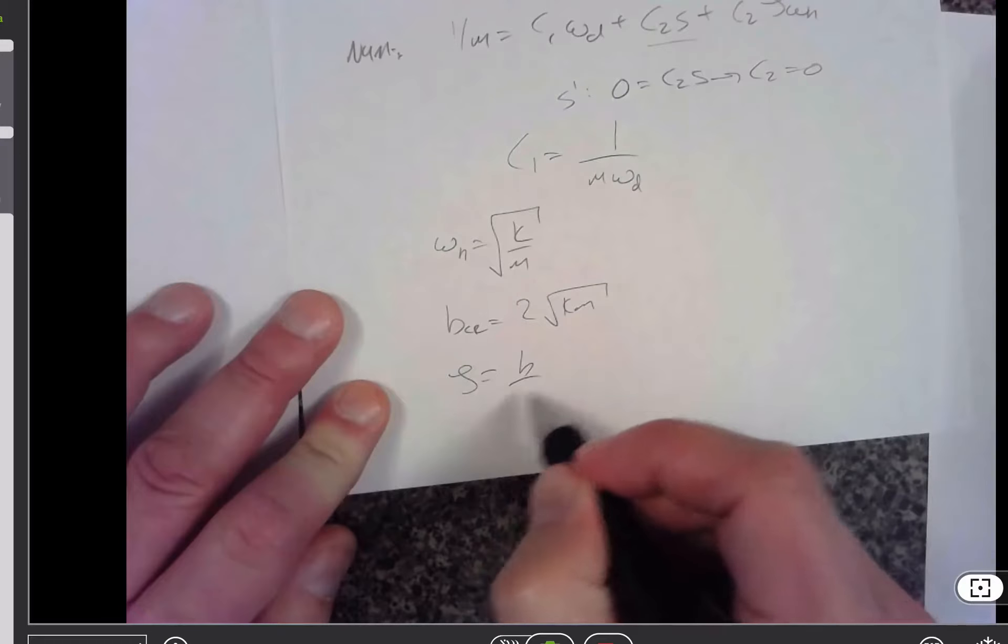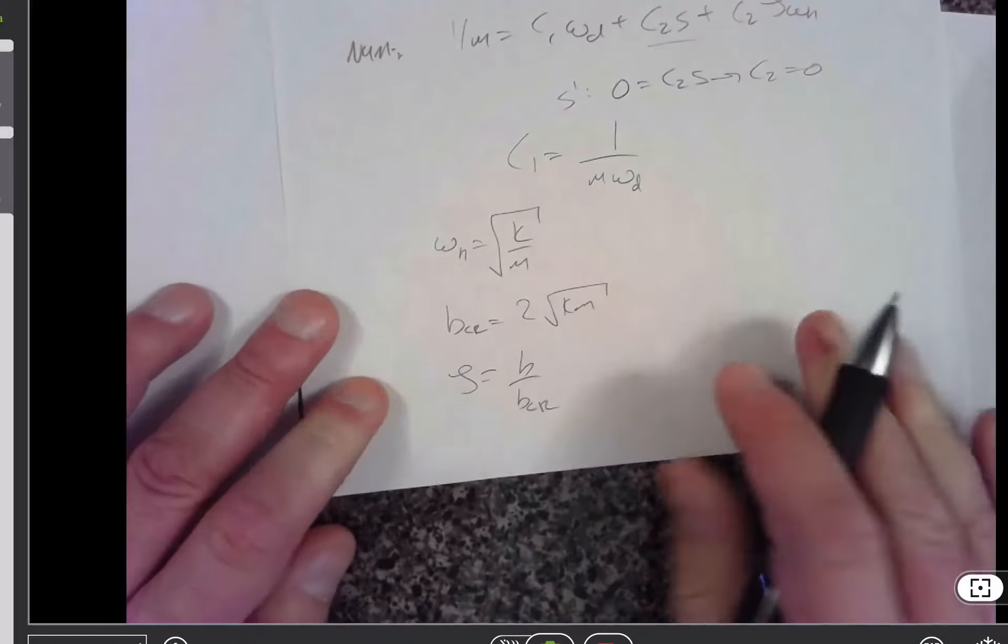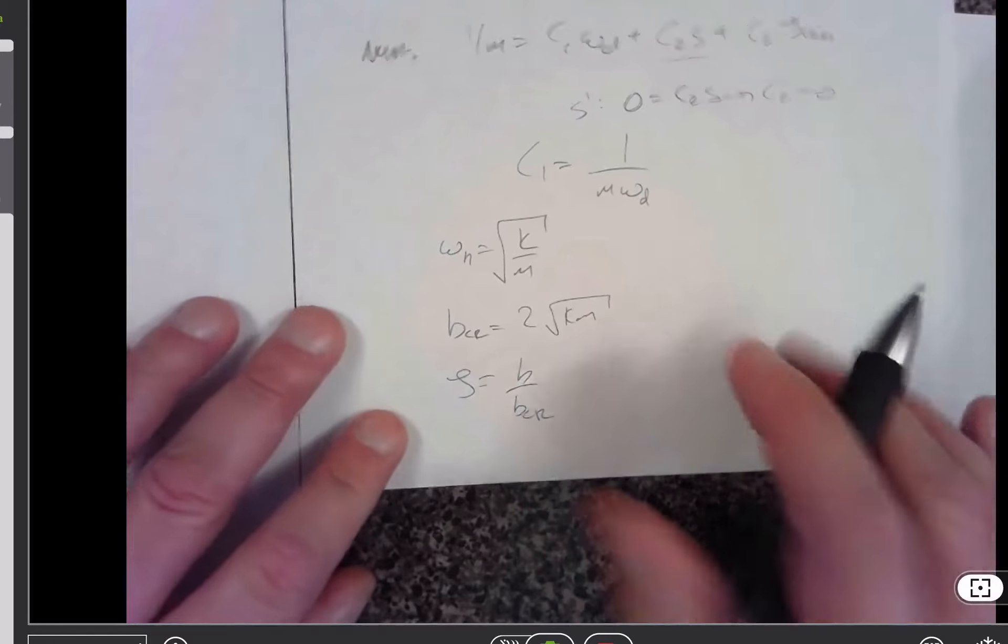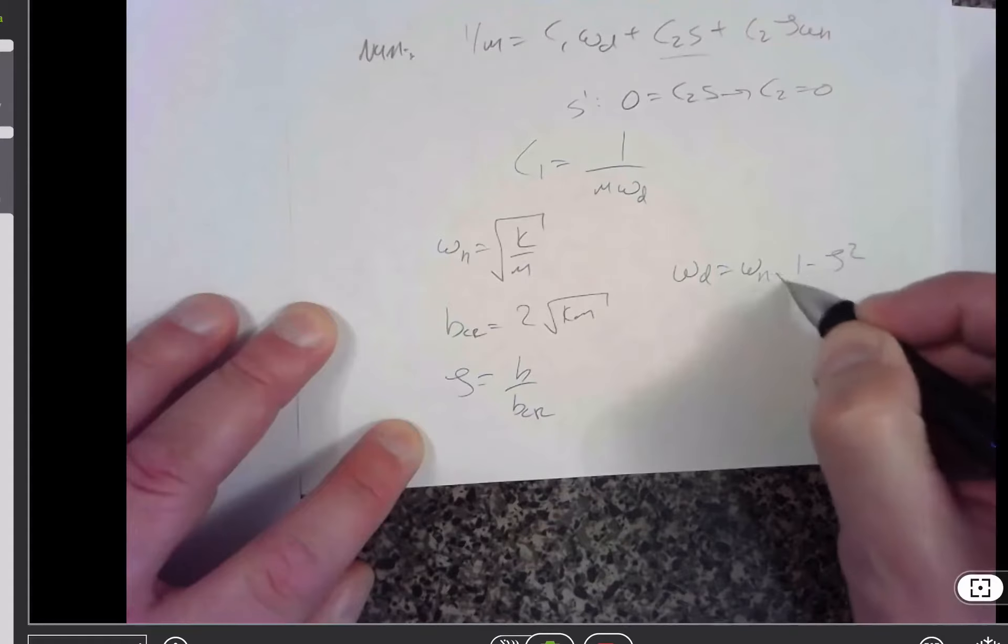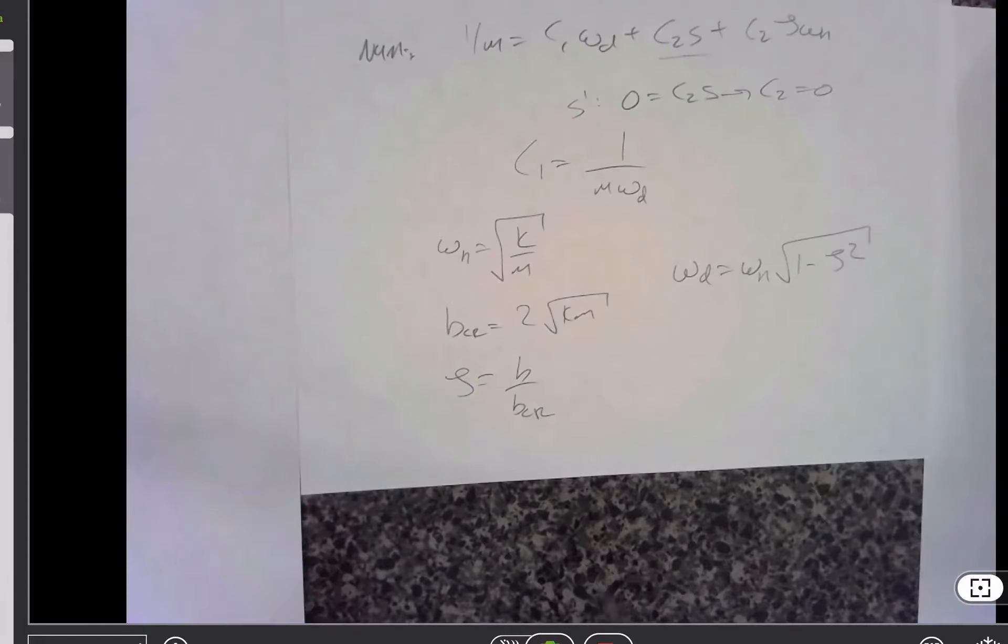I know that zeta is equal to b over b critical, and then I can solve for omega d is equal to omega n 1 minus zeta squared. And I can take all of that, substitute it into c1, and I'm done.